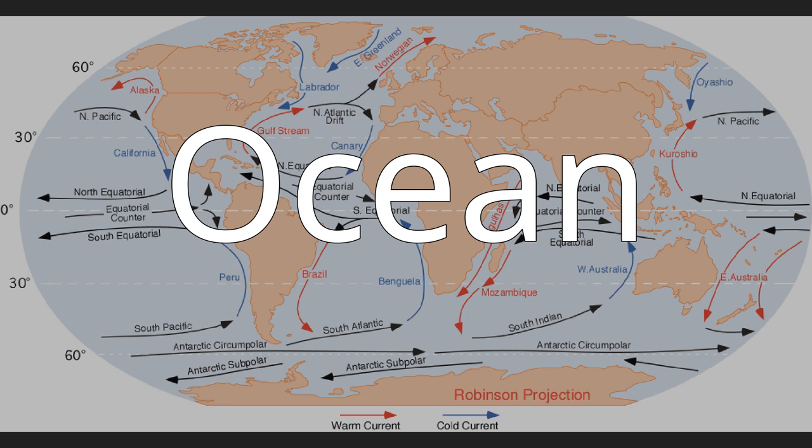Light only penetrates to a depth of a few hundred meters; the remaining ocean below is cold and dark. The continental shelf, where the ocean approaches dry land, is more shallow with a depth of a few hundred meters or less. Human activity has a greater impact on the continental shelf.